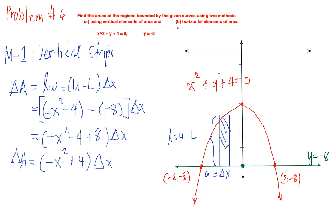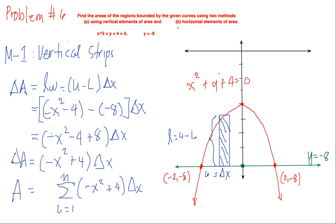The delta area is the representation of one rectangular strip. We now convert this to Riemann sums. The area equals the summation of negative x squared plus 4 times delta x for i from 1 to n. We take the limit as n approaches infinity to make the rectangular strips infinite, to accurately find the area of the region. This is our working equation converted to integral form: the integral of negative x squared plus 4.